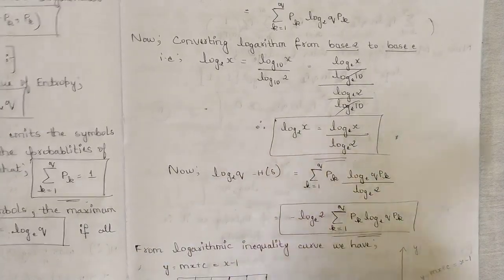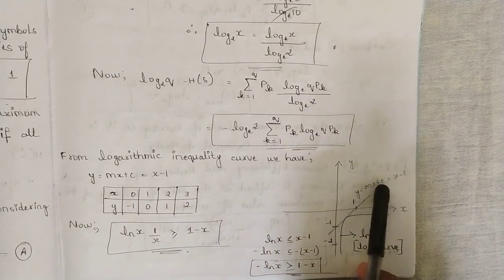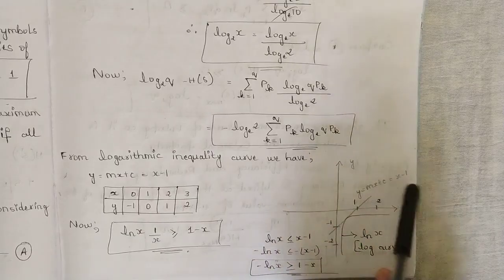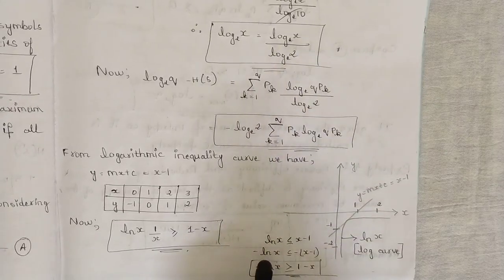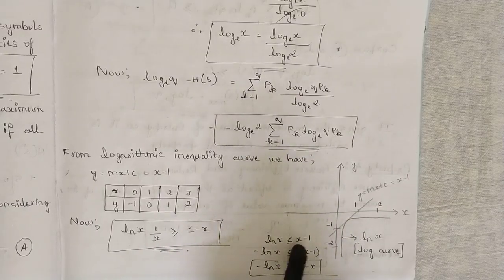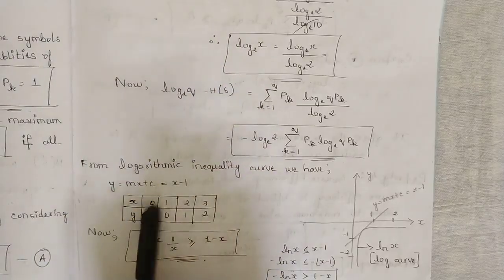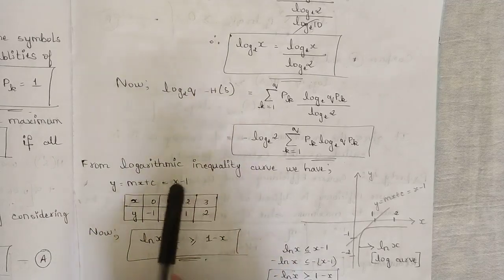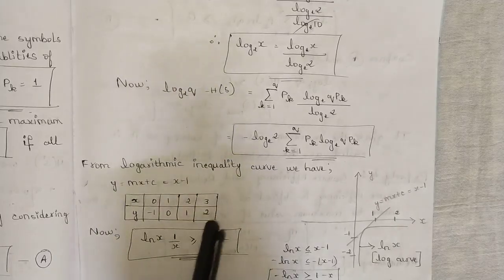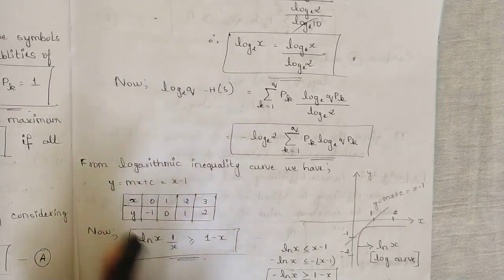From the logarithmic inequality, the natural log function satisfies ln(X) ≤ X minus 1, so minus ln(X) is greater than or equal to 1 minus X. Using a table with Y = X minus 1 for X = 0, 1, 2, 3 confirms this. The conclusion is: ln(1/X) is greater than or equal to 1 minus X.